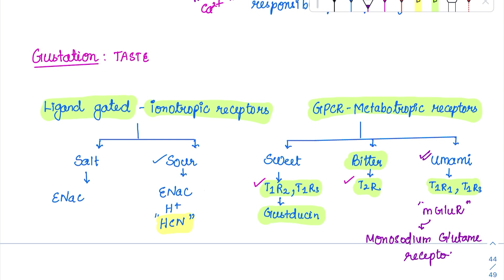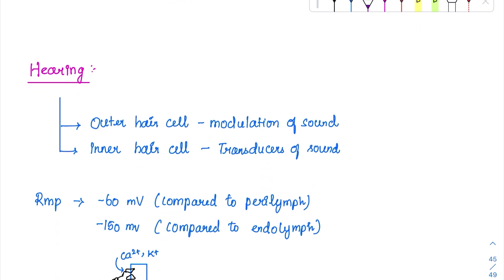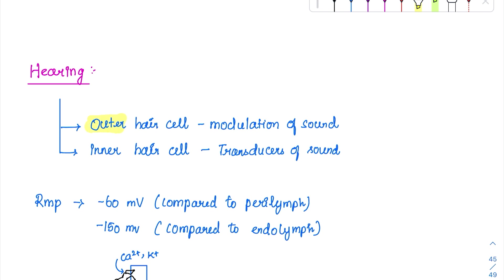Now coming to hearing — it will be extensively discussed in ENT, but we need to know the RMP levels and endocochlear potential. The hearing part has two hair cells: the outer hair cell and the inner hair cell. The modulation of sound is done with the help of outer hair cells, whereas the transduction or actual sensing is done with the help of inner hair cells.